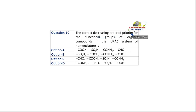The correct decreasing order of priority for the functional groups of organic compounds in the IUPAC system of nomenclature is: Do you remember the priority is given? These priorities are used when more than one functional group is present in an organic compound.